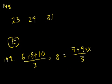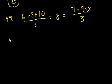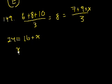And that's equal to the average of 7 plus 9 plus x over 3. So that tells us, multiply both sides of this equation by 3, that says that 24 is equal to, what's 7 plus 9? That's 16 plus x. Subtract 16 from both sides, you get x is equal to 8.